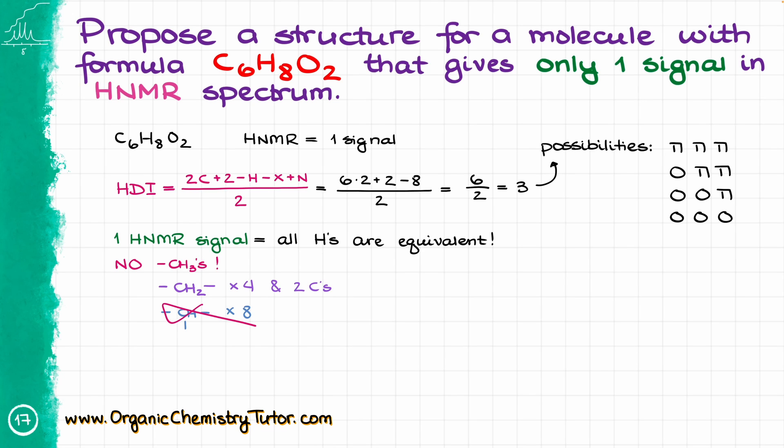So that means that I'm going to be working with four CH2 groups and two carbons in this molecule. Now, knowing that my molecule has only one HNMR signal gives me an idea that the molecule must be extremely symmetrical. So to make it a little bit easier for me to visualize that, I will draw my four CH2 groups in sort of like a very circle-like symmetrical fashion, something like that.